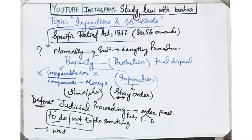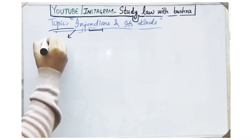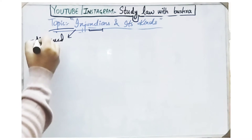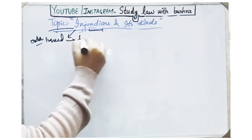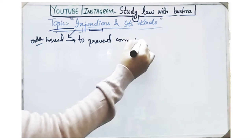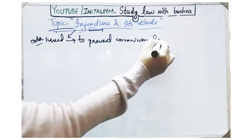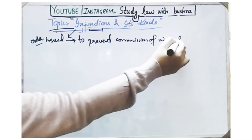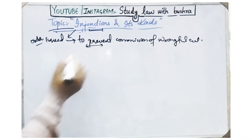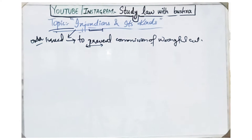That is, it is a judicial proceeding in which the court issues an order to any party — either plaintiff or defendant — to do or not to do any act; they can be told to do something or prevented from doing something. We can also say that injunction is any order by which a person is prevented from committing any wrongful act — meaning you are stopping a person from committing a wrongful act, so that if they are about to commit a wrongful act, they can be stopped.